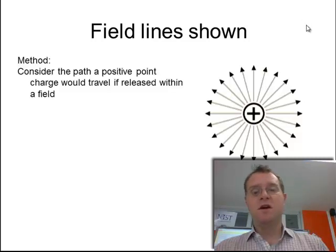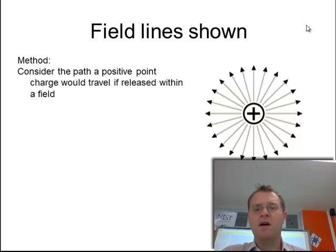So the method is, consider the path a positive point charge would travel if released within a field. If I dropped a positive point charge anywhere around here, I know that it would be immediately repelled away from this positive charge which is creating a field at the moment. So I've got to get that into my head and think about what would happen. And there's a set of rules which we can follow.